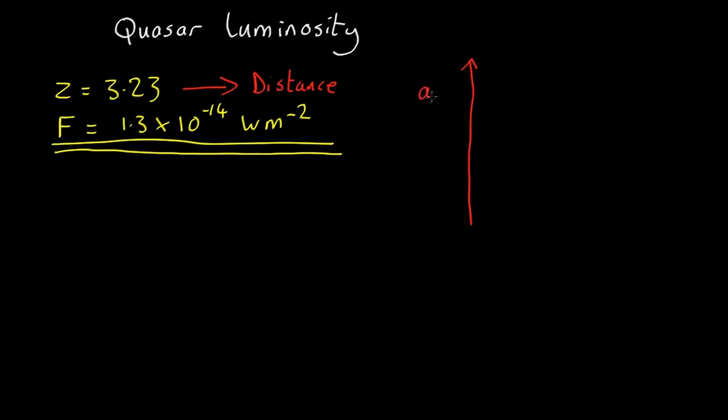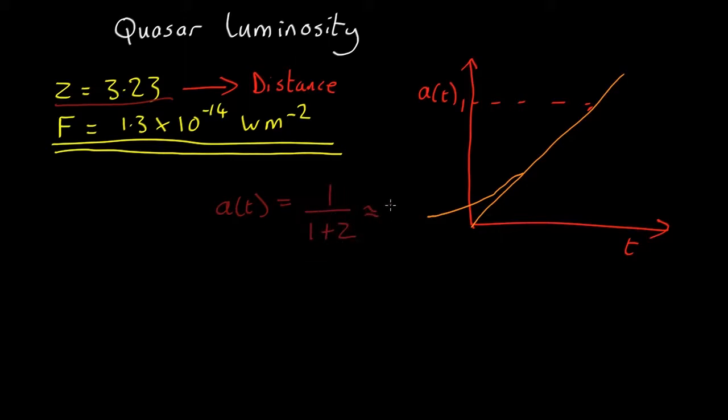So we know space is expanding, so we've got a of t against time t. We know today a of t is 1. Let's assume, as a rough approximation, that a of t just goes linearly with time. We know, of course, that dark energy means it actually goes something like that, and for the real calculation we'll have to take it into account. But let's just take it as going straightforwardly with time, and that'll give us a pretty good estimate. We know that this redshift, 3.23, corresponds to a scale factor a equals 1 over 1 plus z, which comes out as about 0.23.